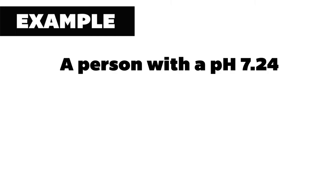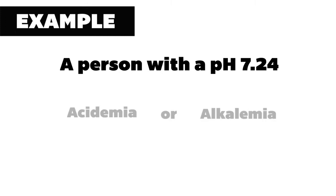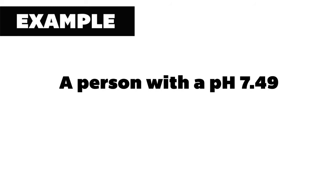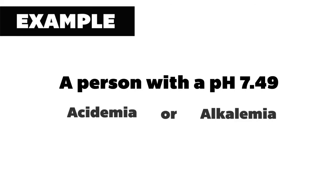For example, a person has a pH of 7.24 — how would you define this person's pH? This person has an acidemia, or is acidemic. In our next example, a patient has a pH of 7.49 — how would you define this person's pH? This person has an alkalemic pH.